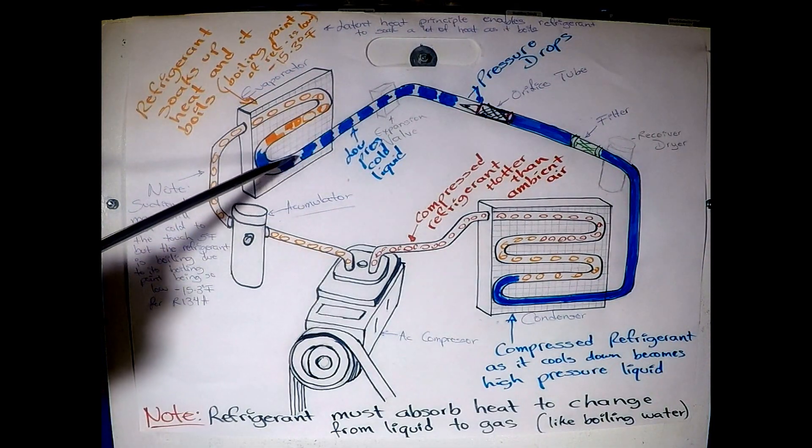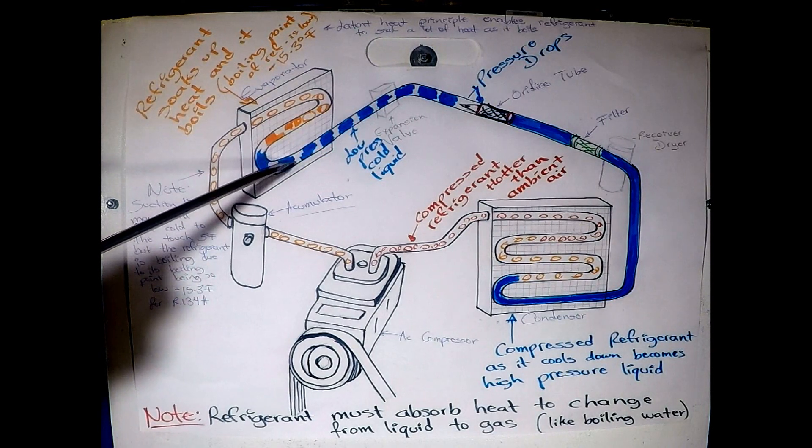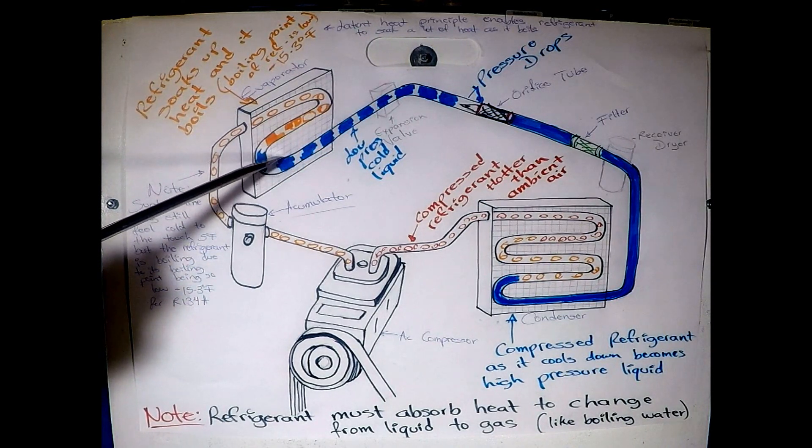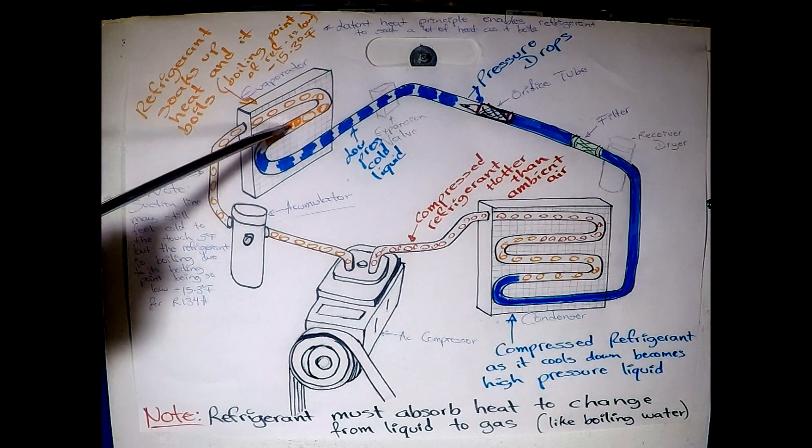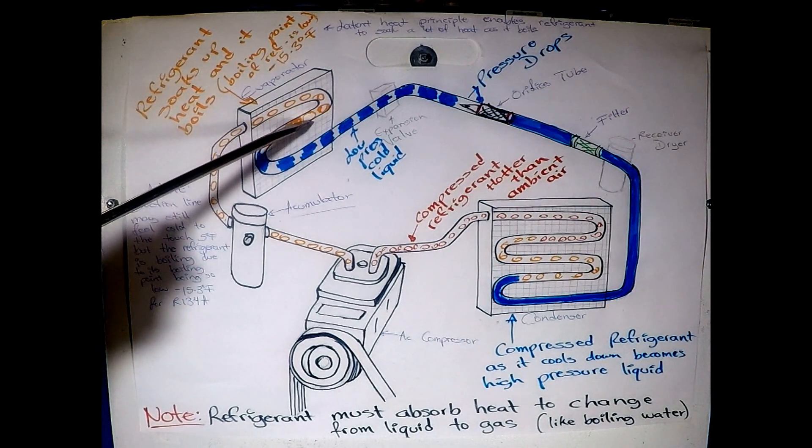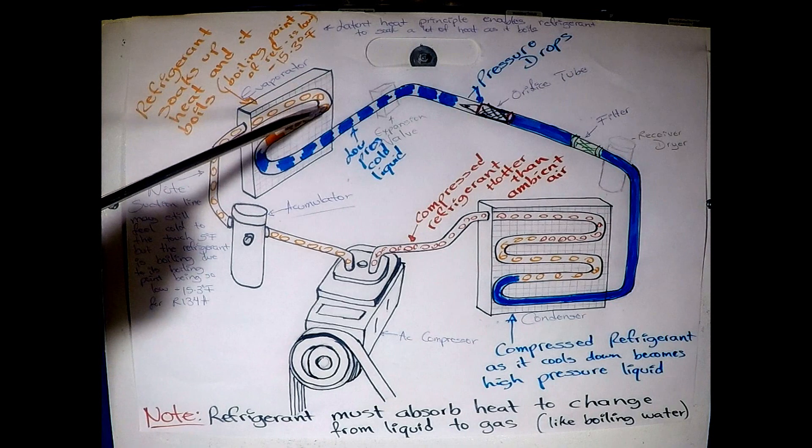So as it arrives to the evaporator, since the refrigerant is a lot colder than the temperature inside the vehicle, it starts absorbing the heat. And as it does, it starts boiling. And as it boils, it absorbs more heat. Remember the latent heat principle? That when a substance starts boiling, it can soak up a lot more heat.